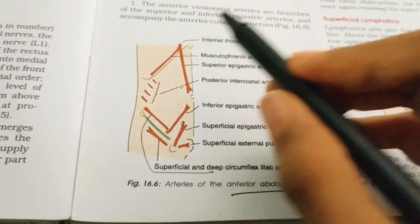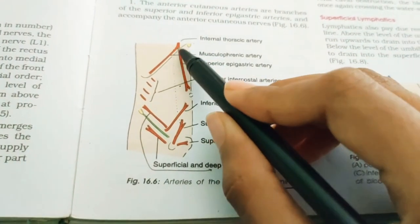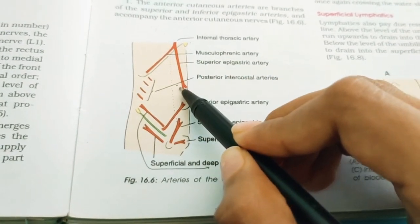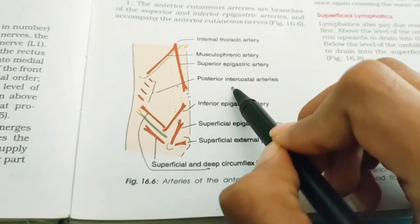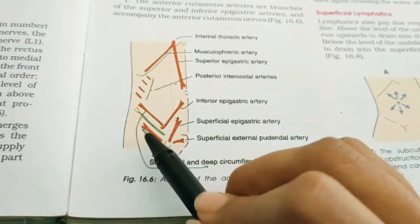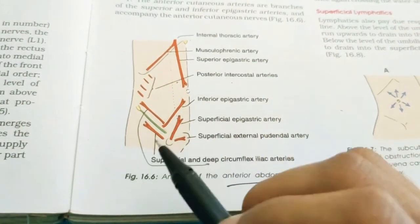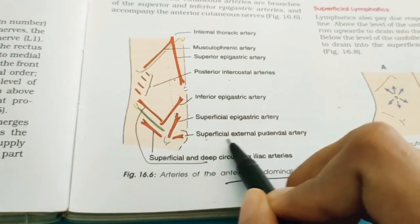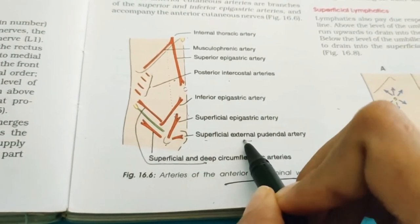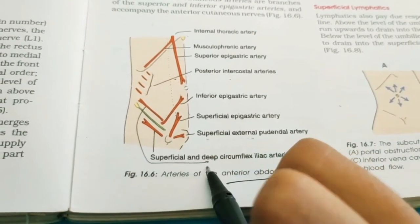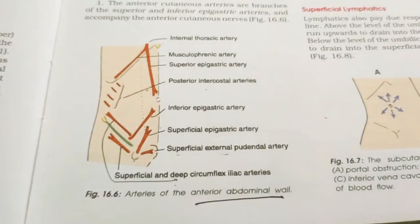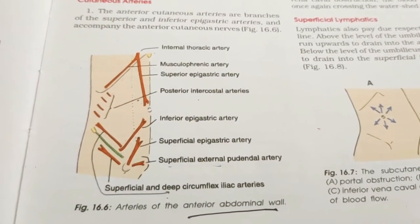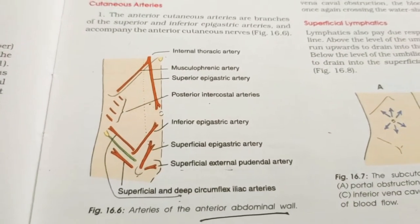To summarize the arterial supply: the internal thoracic artery divides into the musculophrenic artery and superior epigastric artery; on the lateral side are the posterior intercostal arteries; from below come the inferior epigastric artery, superficial epigastric artery, superficial external pudendal artery, and the superficial and deep circumflex iliac arteries.